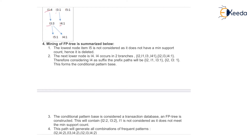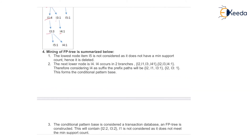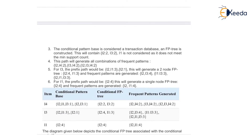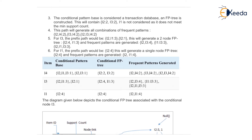In the fourth step, the mining of the FP tree is summarized. The lowest node item I5 is not considered because it has a minimum support count of 1. The next lower node is I4, which occurs two times in branches: {I2, I1, I3, I4} and {I2, I3, I4}. The conditional pattern base for I4 is: prefix path I2, I1, I3 with count 1, and I2, I3 with count 1. The conditional FP tree contains I2 and I3; I1 is not considered as it does not meet the minimum support count. For I3, the prefix path would be I2, I1 with count 3 and I2 with count 1. This generates a two-node FP tree where I2 is 4 and I1 is 3, and frequent patterns are generated.